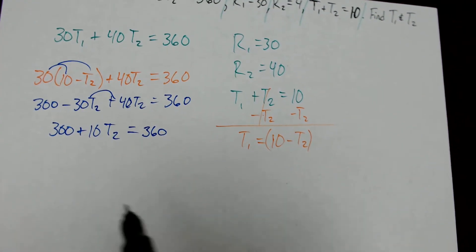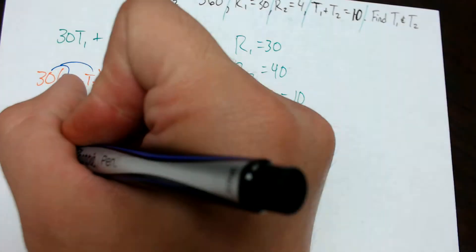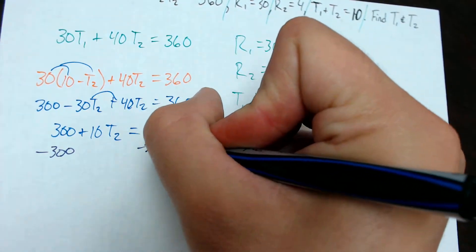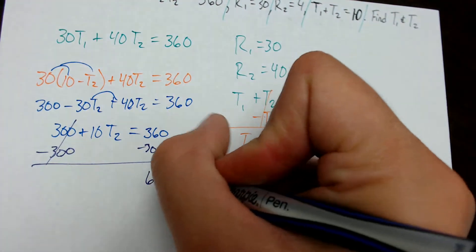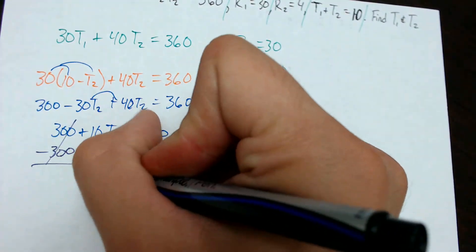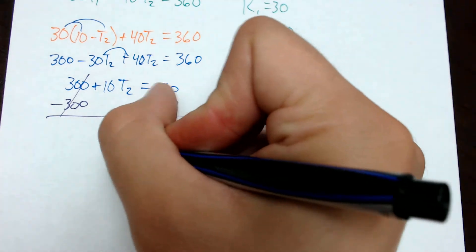Using PEMDAS backwards, I'm going to attack this 300. Since it's being added, I can subtract 300 from each side. That cancels. 360 minus 300 becomes 60. And then I have 10 times T2 equals 60. From here, I'll divide each side by 10.